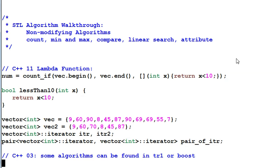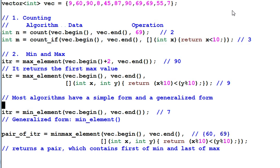Today we'll be walking through the non-modifying algorithms, which includes count, mean and max, compare, linear search, and the checking of certain attributes. Note that some of the algorithms are only exist in C++11, but if you're using the old C++, you can always find the algorithms in either TR1 or Boost. Now let's get started.